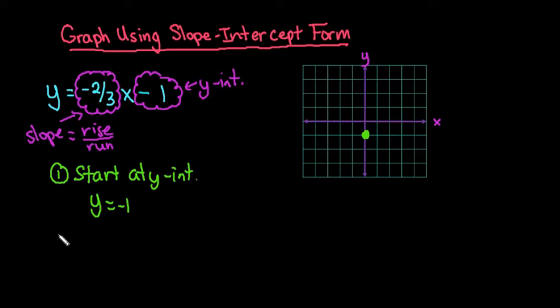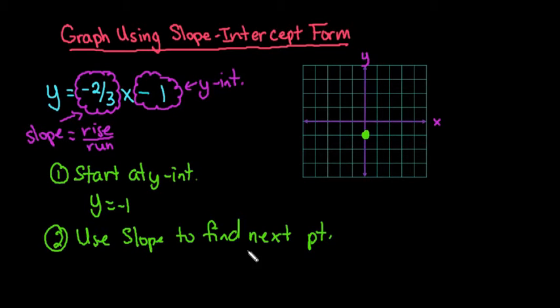From there, what we're going to do is use slope to find the next point. And if you want, I tend to do 3 points just because it makes a straighter line. You only need 2 points, but you can do this process as many times as you need to guarantee that you have a straight line.